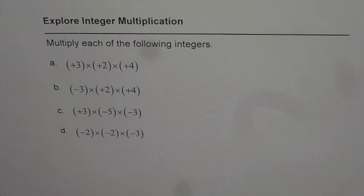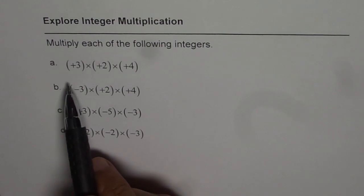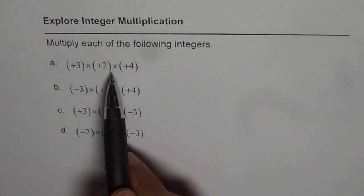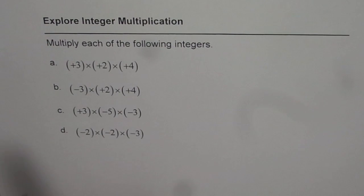Let us multiply these integers and check our result. First question is: plus three times plus two times plus four, all are positive.